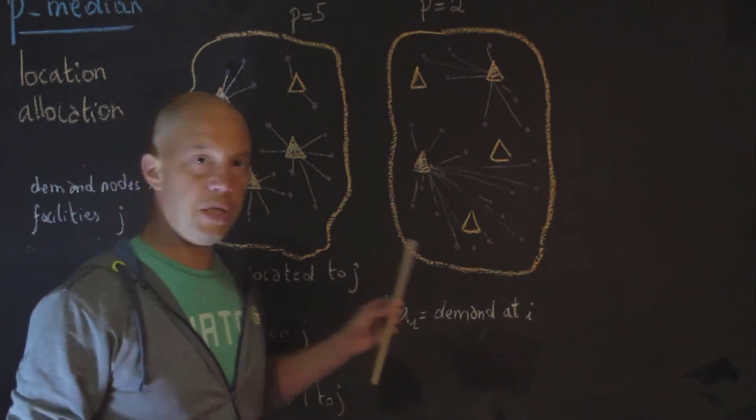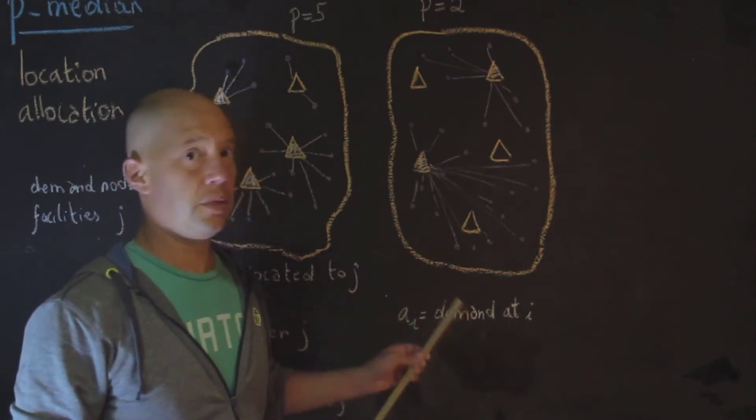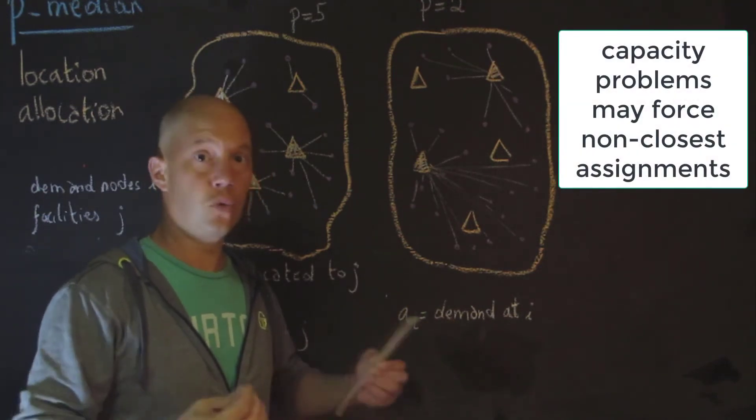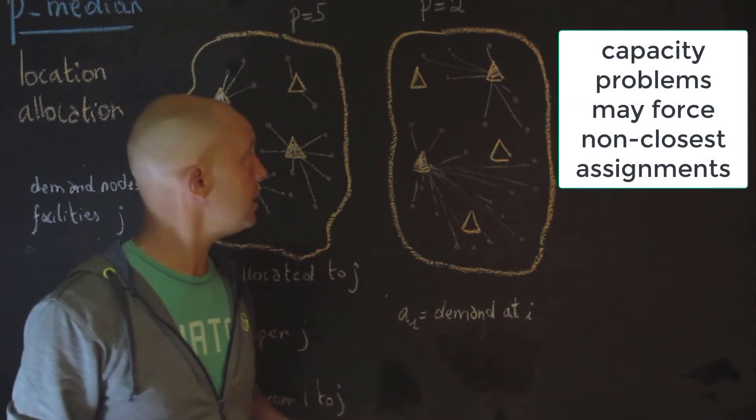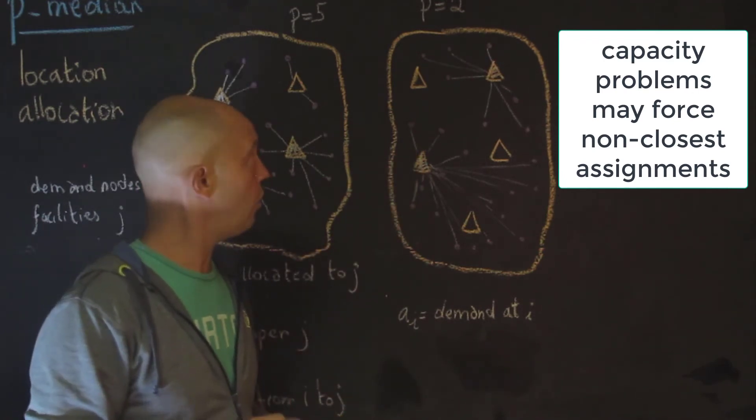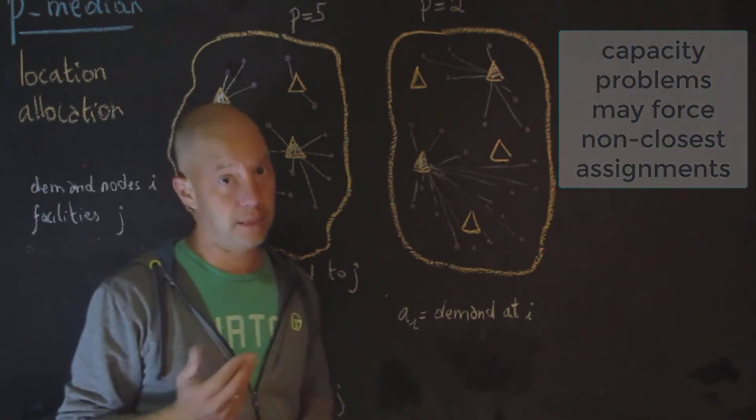Now, there are some issues, and I say generally they're assigned to their closest, but not always. And that could be the problem when you have capacities. So schools, for instance, they work at a certain capacity. So you may not always have this assignment to the closest open facility. But that's a desirable goal.